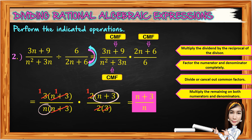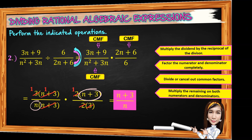Take note: we cannot cancel n because n is the first term of the binomial on the numerator, while n on the denominator is a monomial. We only cancel common factors, not common terms.